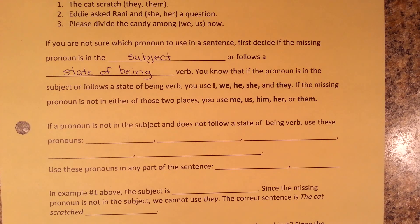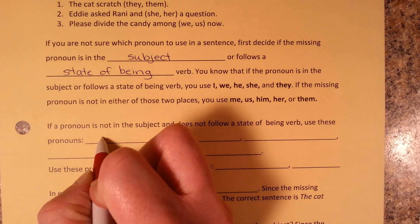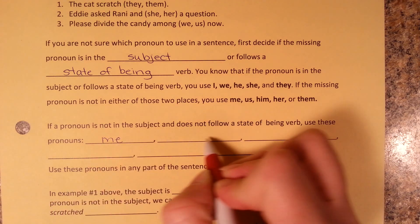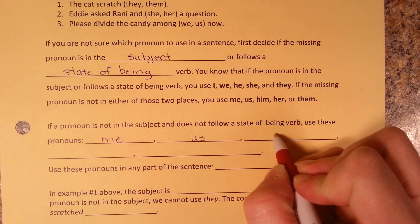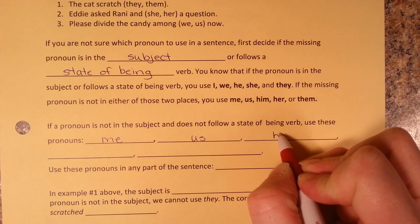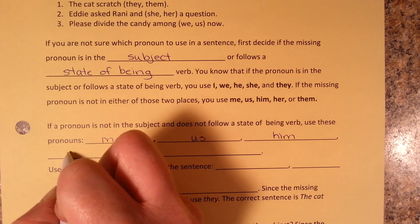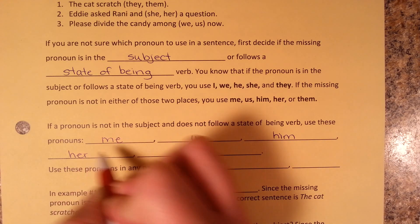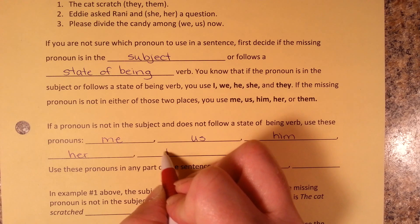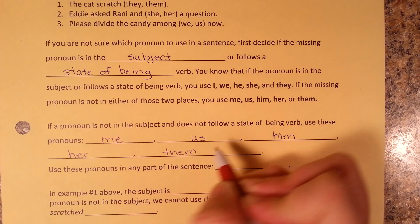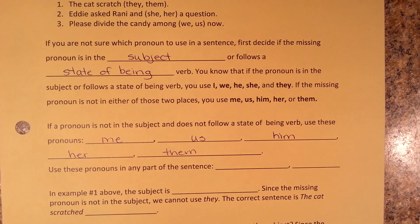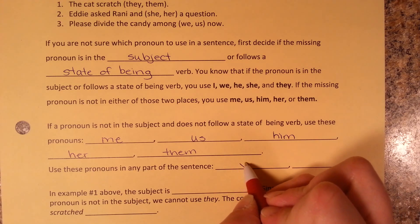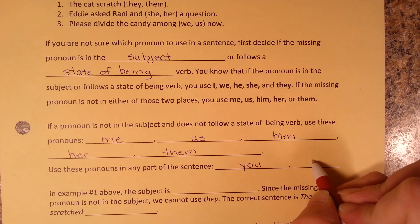If the pronoun is not the subject and does not follow the state of being verb, use these pronouns: me, us, him, her, them. Use these pronouns in any part of the sentence: you, it.